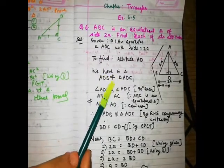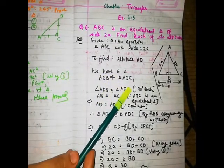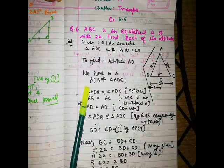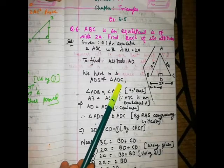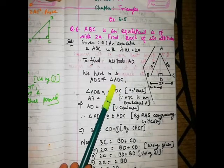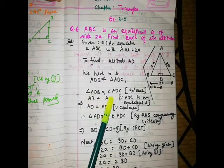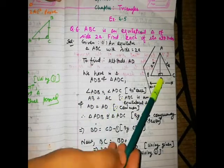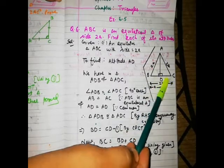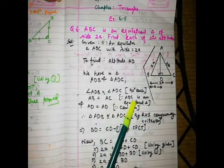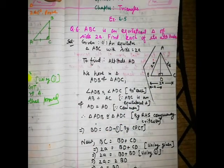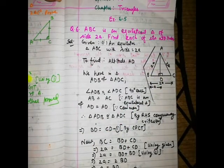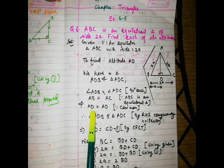In triangles ADB and ADC, we will first prove that they are congruent. Angle ADB is equal to angle ADC — both are 90 degrees each, because AD is the altitude and an altitude makes an angle of 90 degrees with the base.